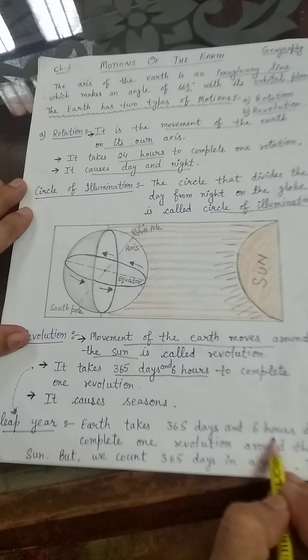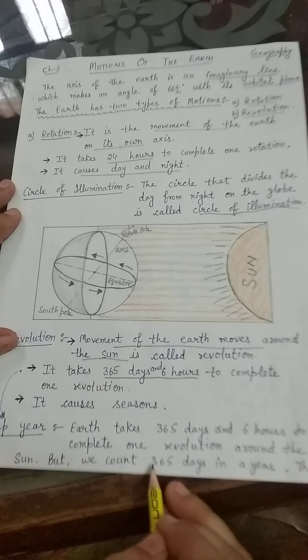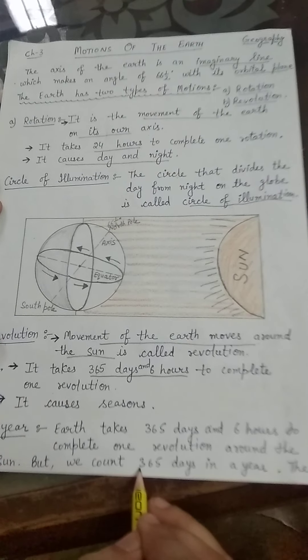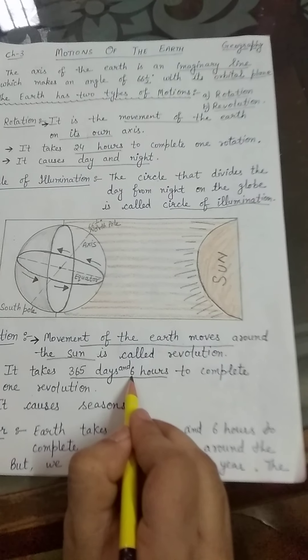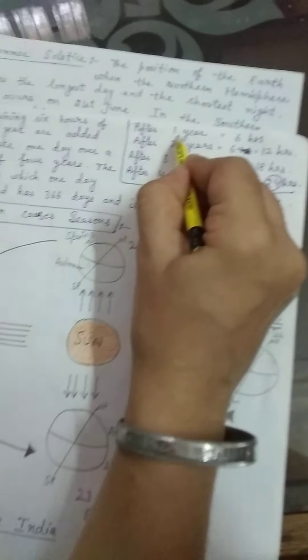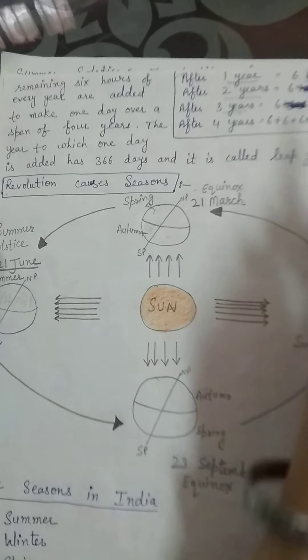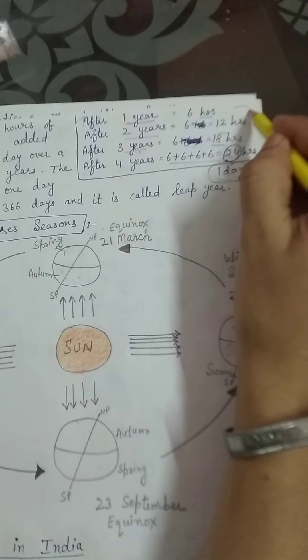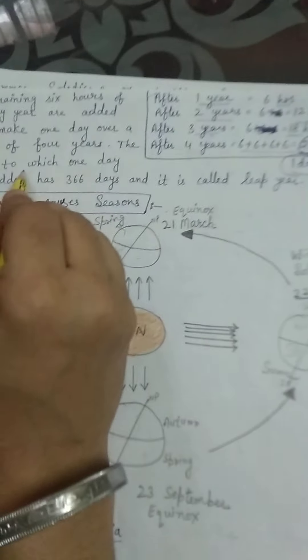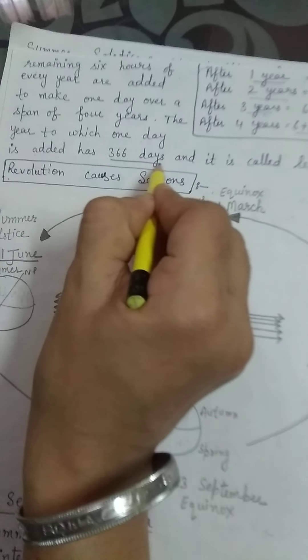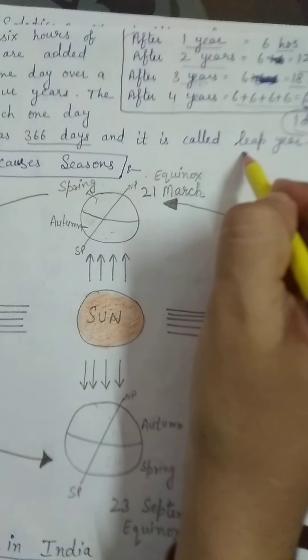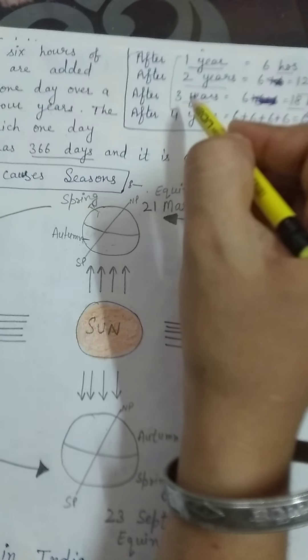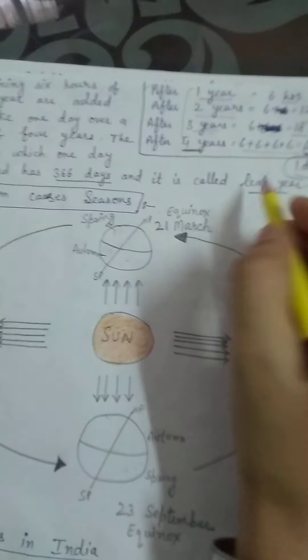It takes 365 days and 6 hours to complete one revolution around the sun. For convenience, we count 365 days in a year. The remaining 6 hours of every year are added to make one day over a span of four years. The year to which one day is added has 366 days and it is called a leap year.